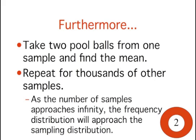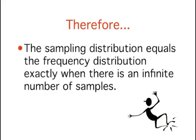There is an alternative way of conceptualizing a sampling distribution that will be useful for more complex distributions. This time, we're going to use multiple samples. Imagine that two balls are sampled with replacement, and the mean of the two balls is computed. This process is repeated for thousands of other samples. A relative frequency distribution is drawn for the entire set of means. The more samples, the closer the relative frequency distribution will come to the sampling distribution. You can conceive of a sampling distribution as being a frequency distribution based on a very large number of samples. To be strictly correct, the sampling distribution only equals the frequency distribution exactly when there is an infinite number of samples.